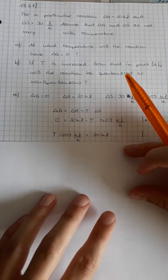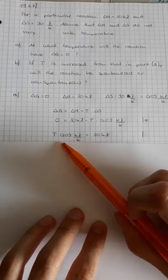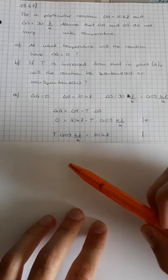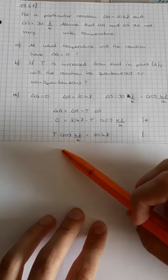We search the temperature and therefore we have to bring the temperature and the entropy on the left side. And now we have to divide through 0.09 kilojoule per kelvin because we need the temperature on the left side alone.